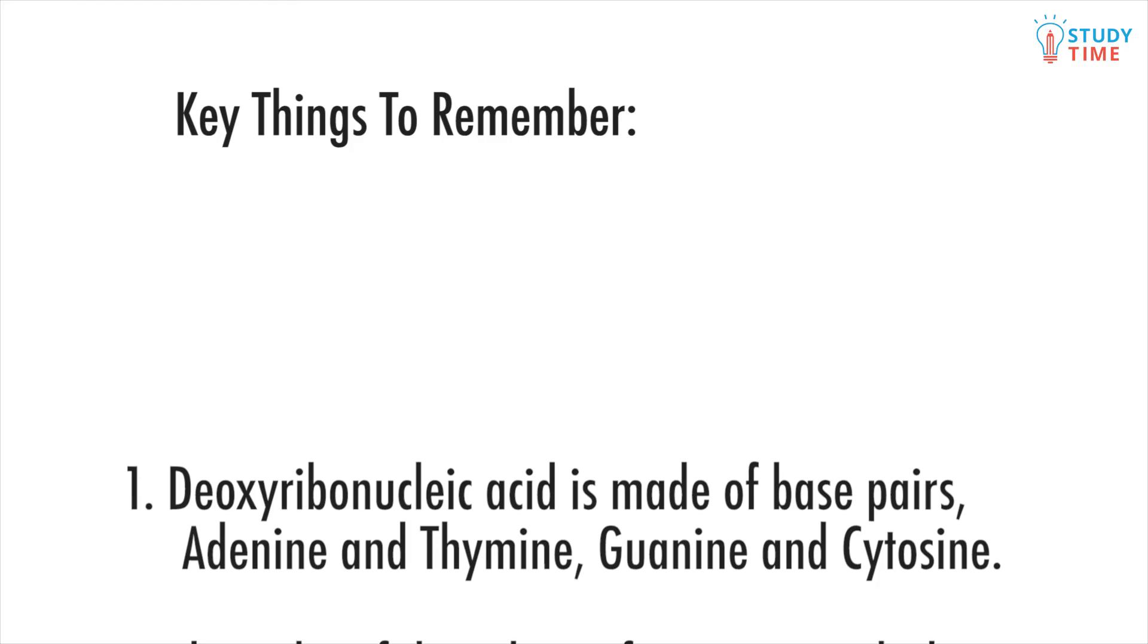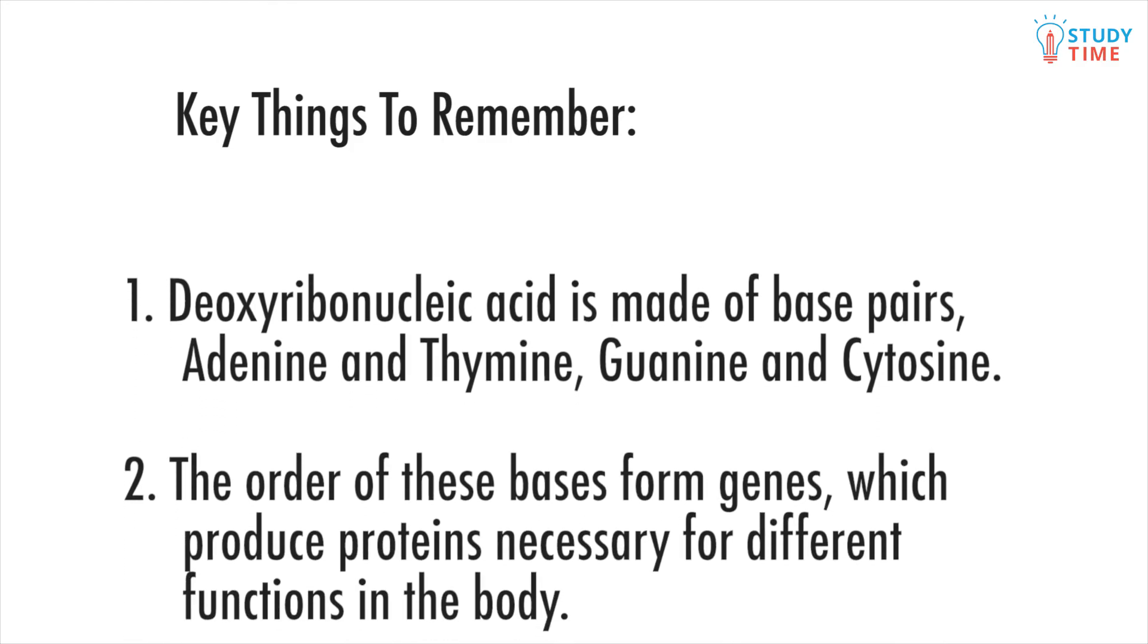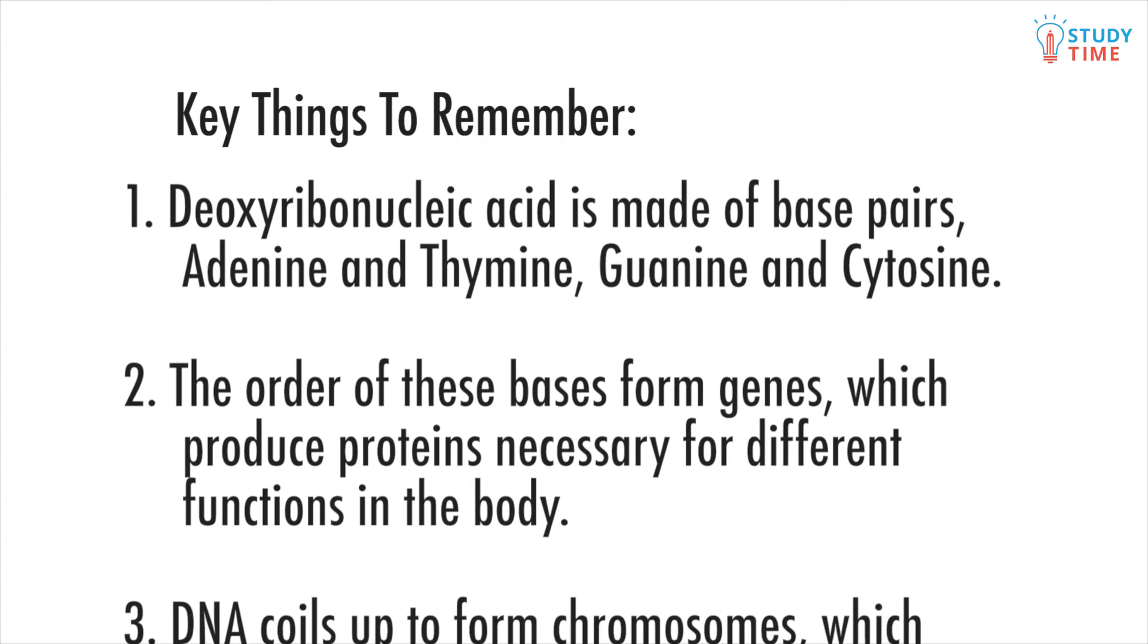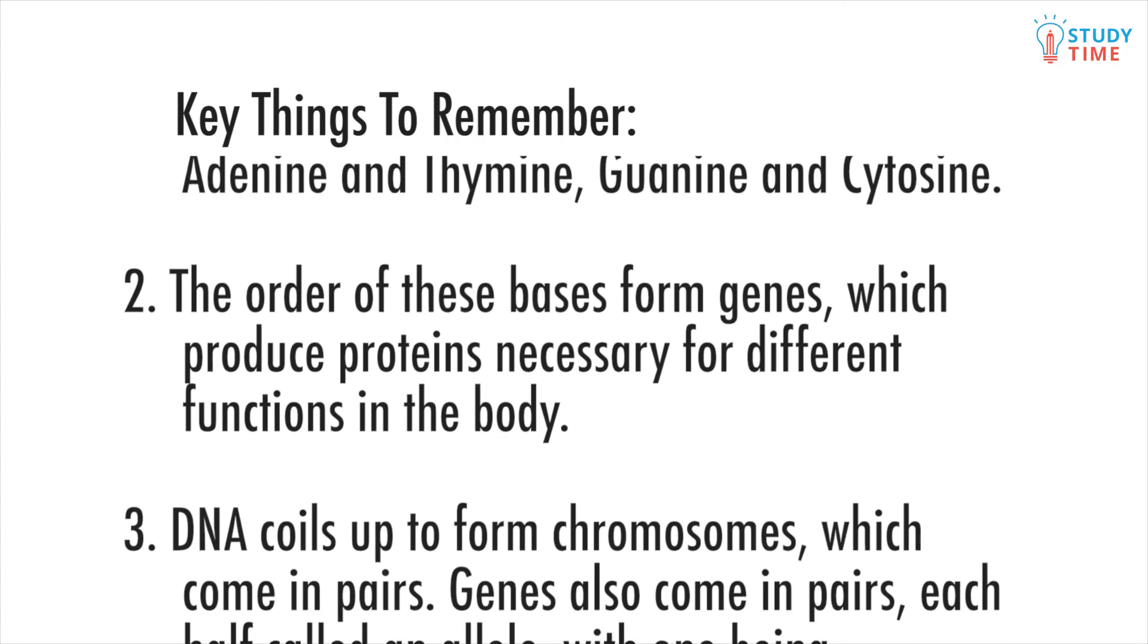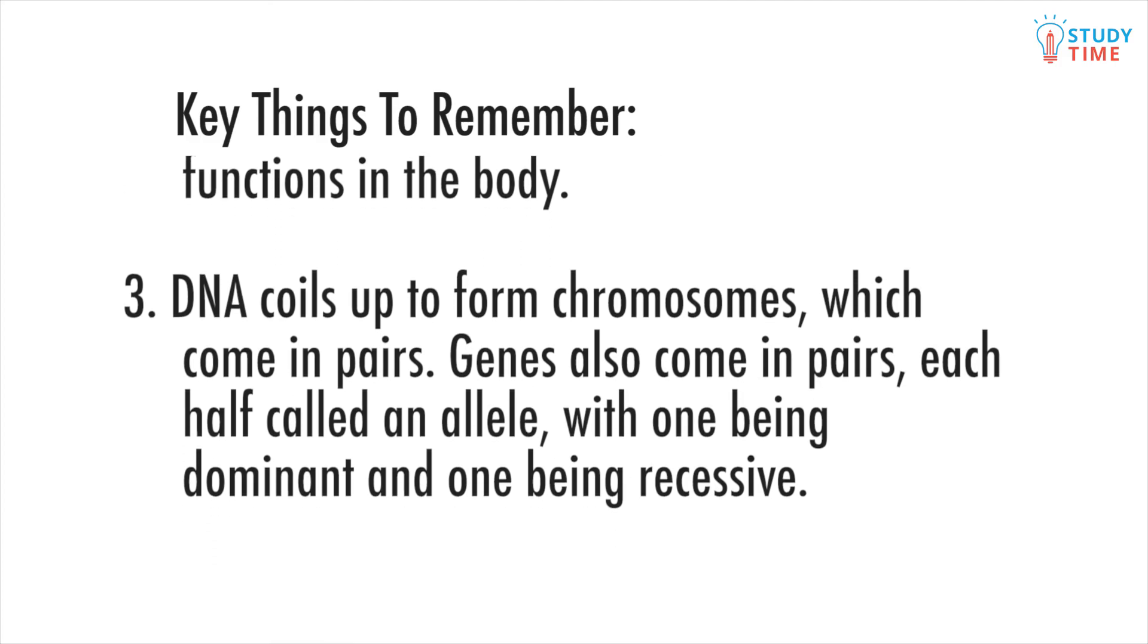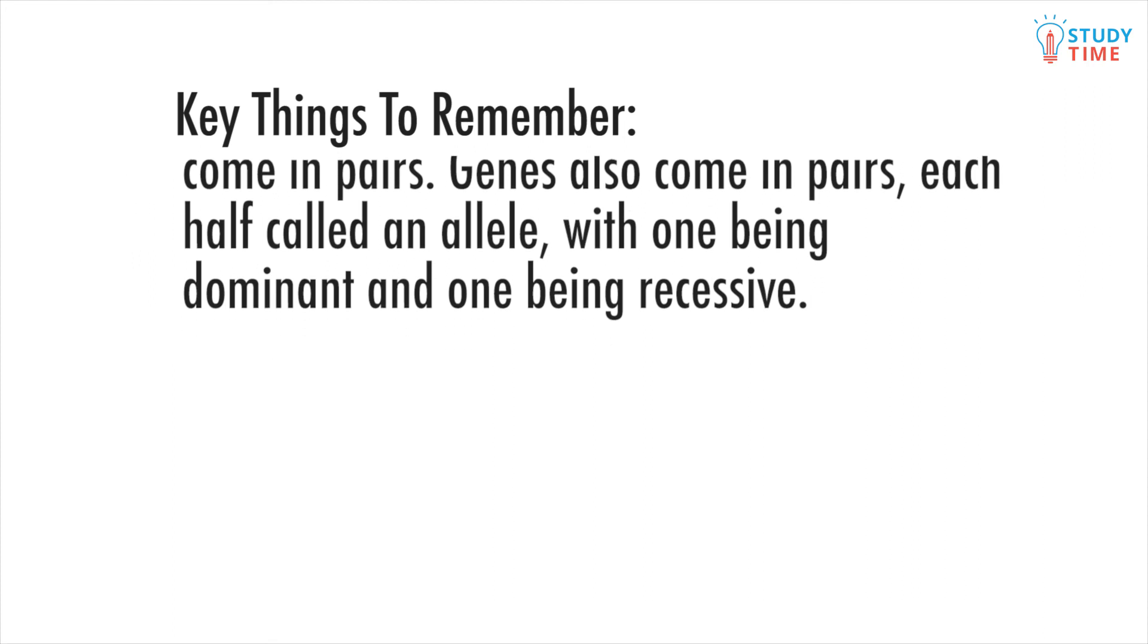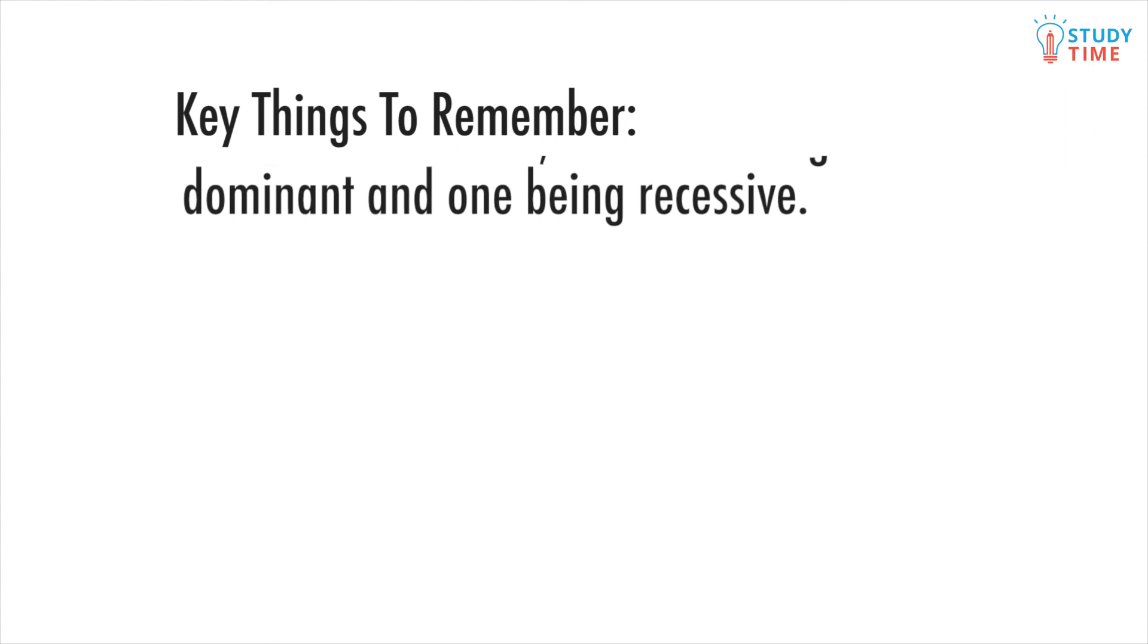Key things to remember: Deoxyribonucleic acid is made of base pairs—adenine and thymine, guanine and cytosine. The order of these base pairs forms genes, which produce proteins necessary for different functions in the body. DNA coils up to form chromosomes, which come in pairs. Genes also come in pairs, each half called an allele, with one being dominant and one being recessive.